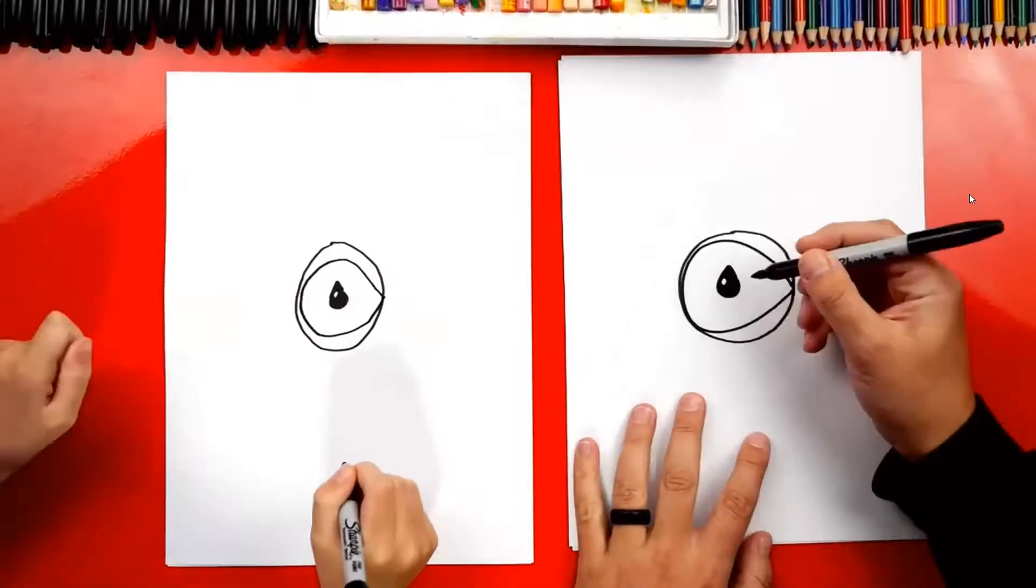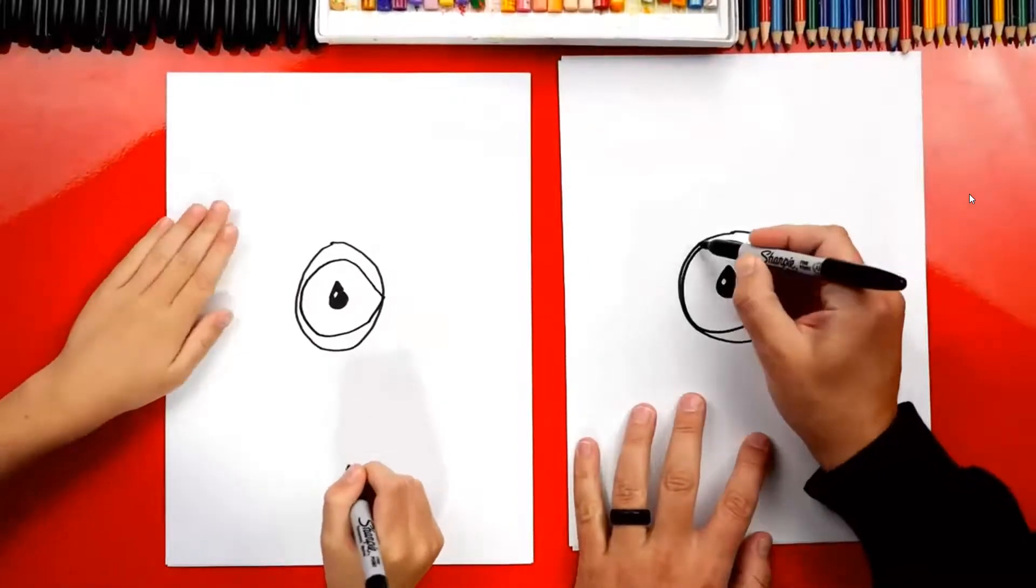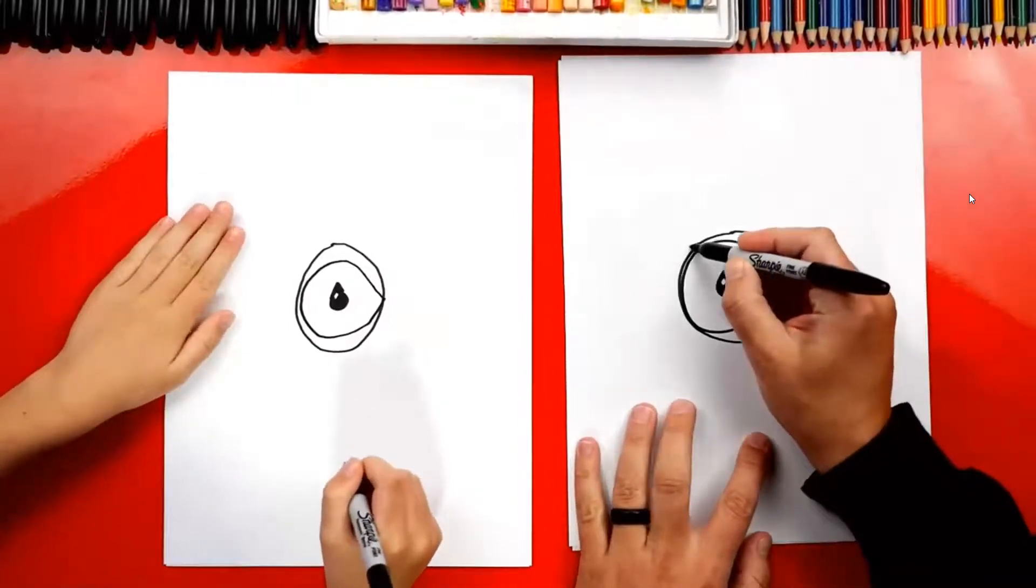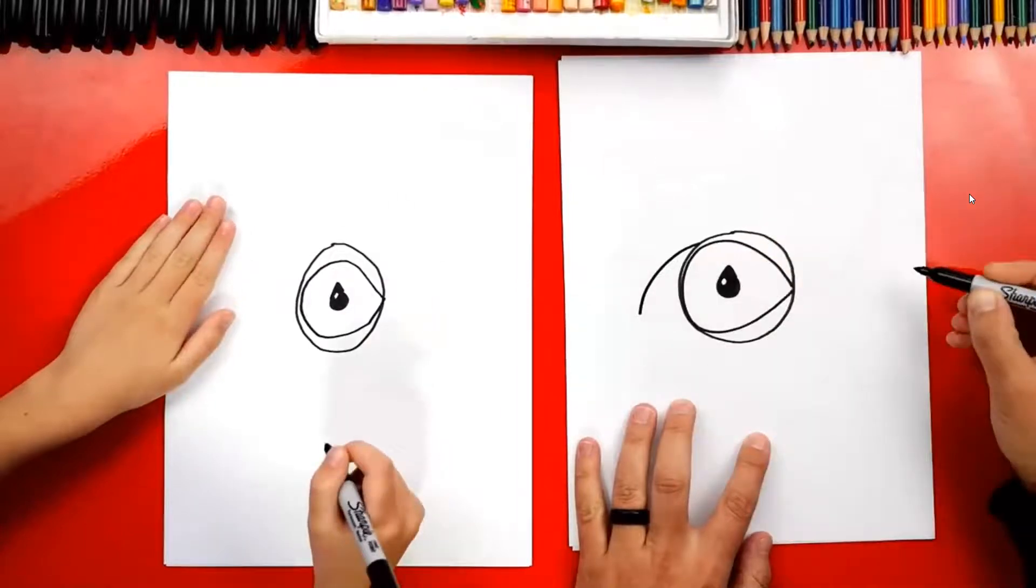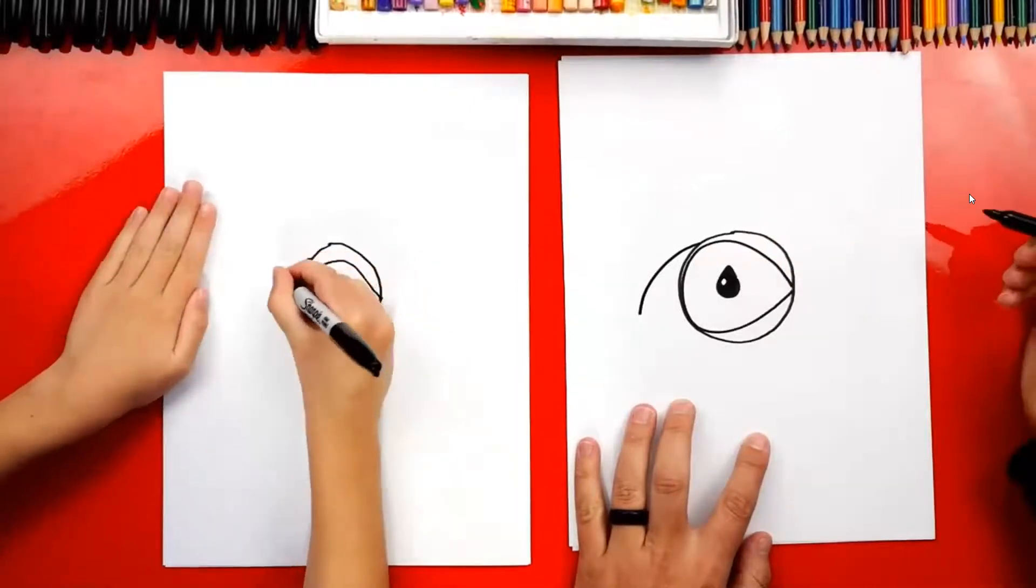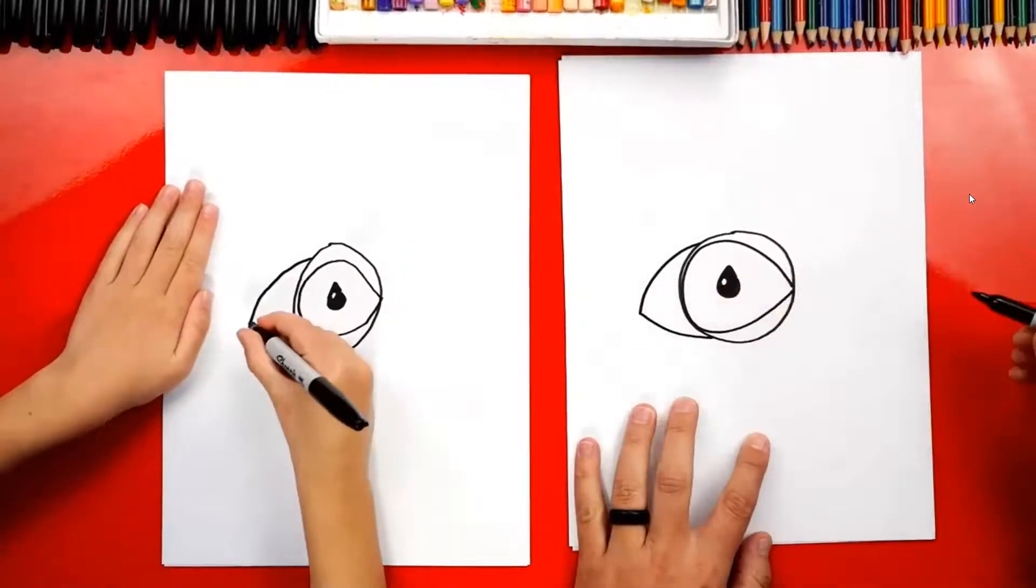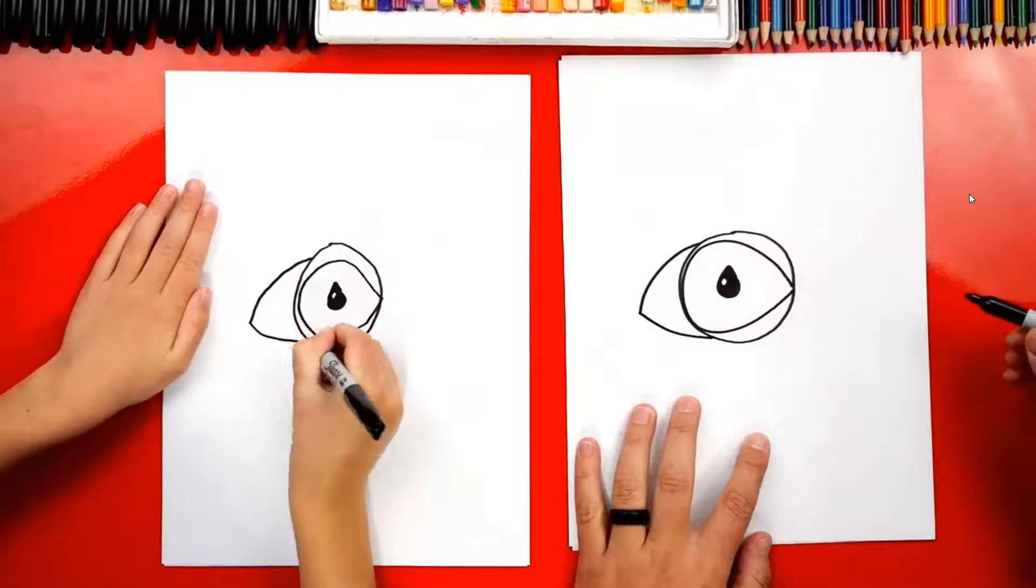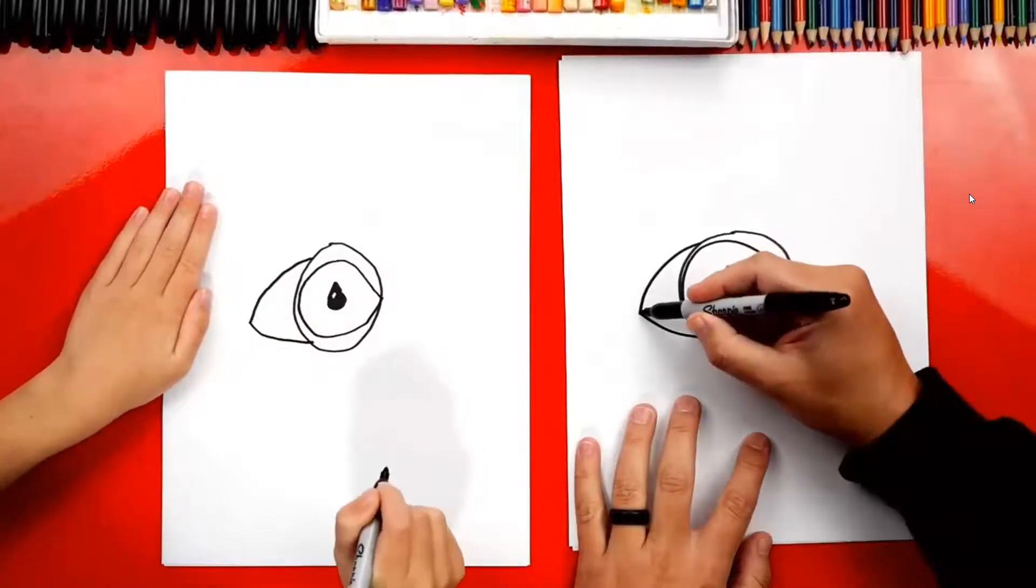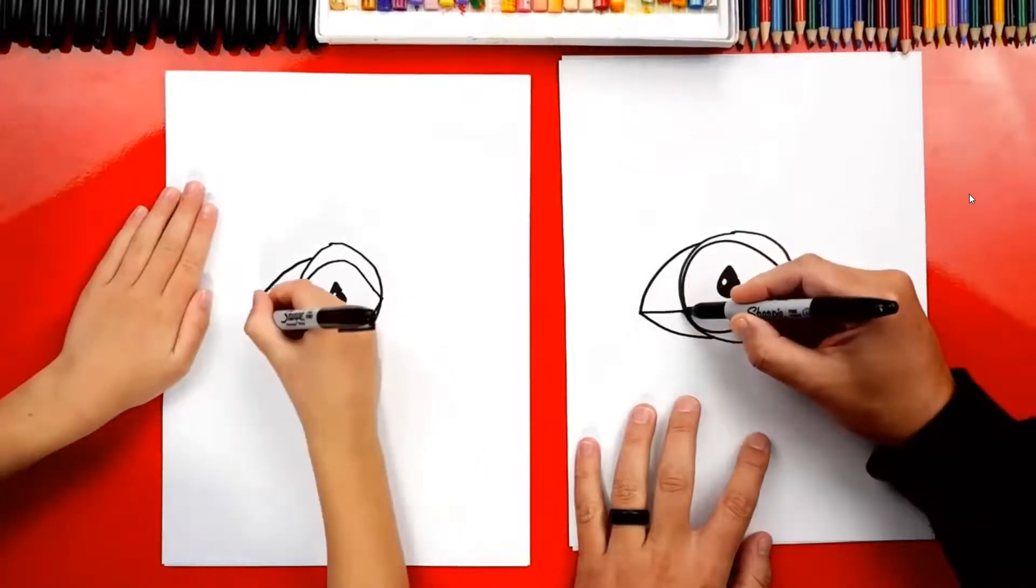All right, now let's draw the beak for a puffin. We're going to start up here on the top of the circle and we're going to draw a curve that comes down. And then we're going to draw another curve that comes back in to the bottom of the head.